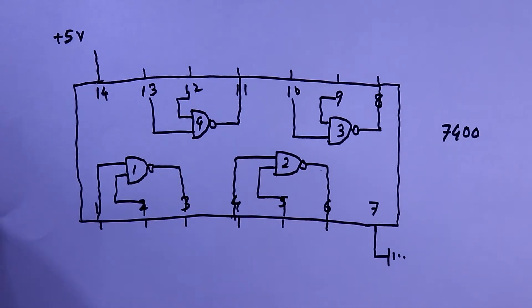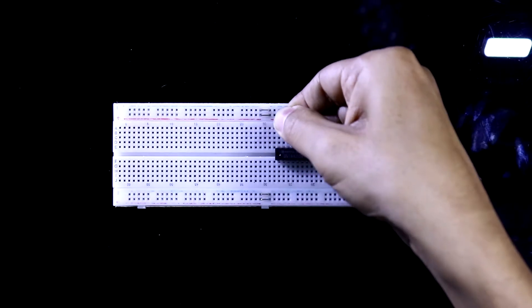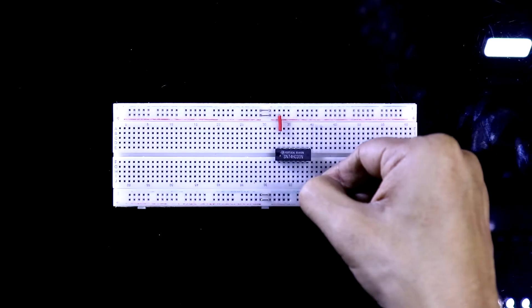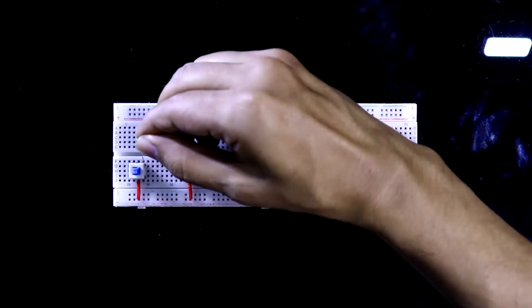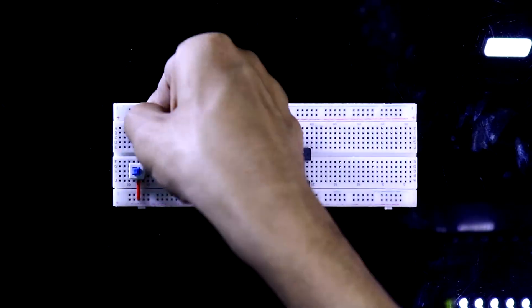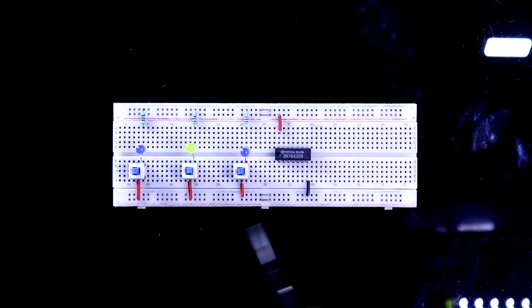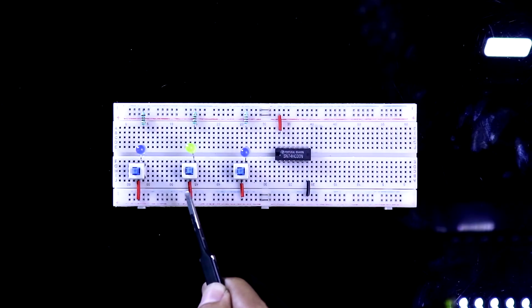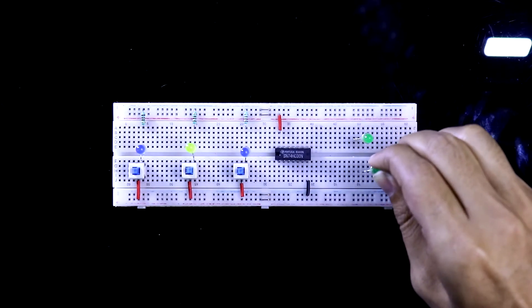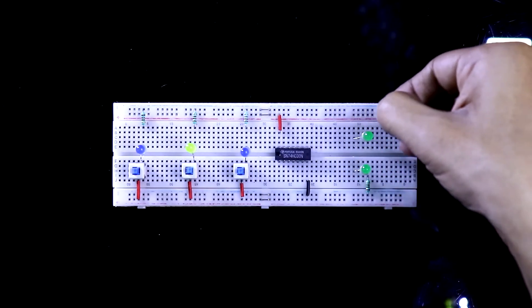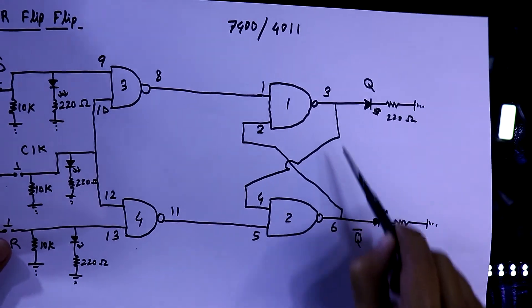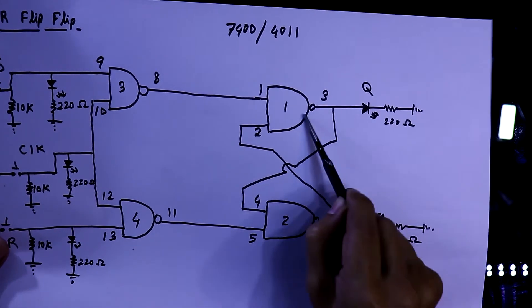According to the pin diagram we have to connect pin number 7 to ground and pin number 14 to plus 5 volt. I'm putting three input switches — one pin of each switch is connected to plus 5 volt; with the other side I'll connect the LED and resistor. This switch is for S, this one is for R, and this one is for clock. The two output LEDs have 220 ohms resistors connected to ground. Pin 3 is Q and pin 6 is Q-bar.